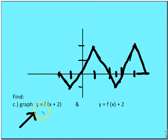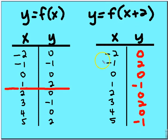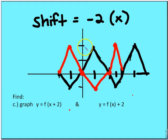Now let's compare the original function with y equals f of x plus 2 and y equals f of x plus 2 outside the parentheses. We'll draw the original graph and create two tables. For y equals f of x plus 2, filling in the y values gives 0, 2, 0, 1, 0, 2, 0, 1. Graphing this function, you can see the graph is shifted 2 units to the left.